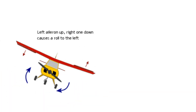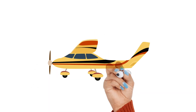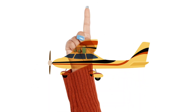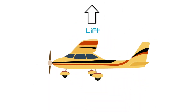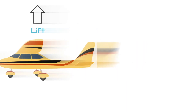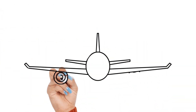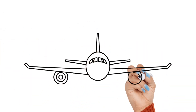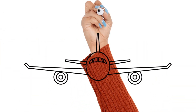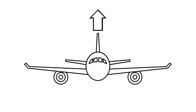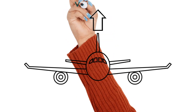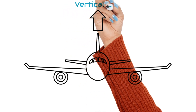We also spent some time talking about lift in our previous lessons, but let's look at lift in a more in-depth way. When our airplane is flying straight and level, the lift that is produced goes straight up and down. This is called vertical lift.